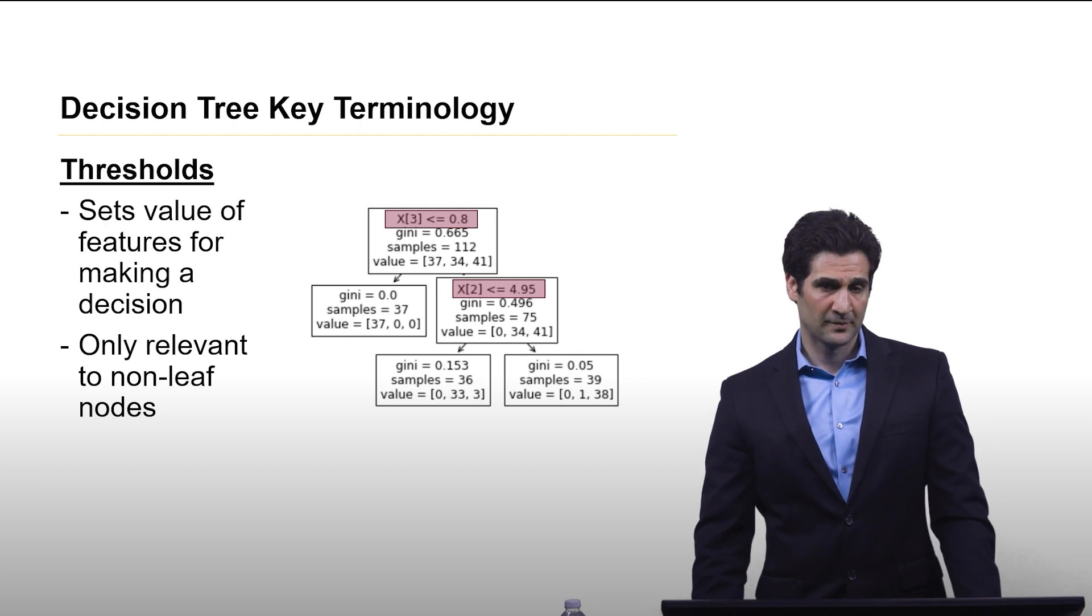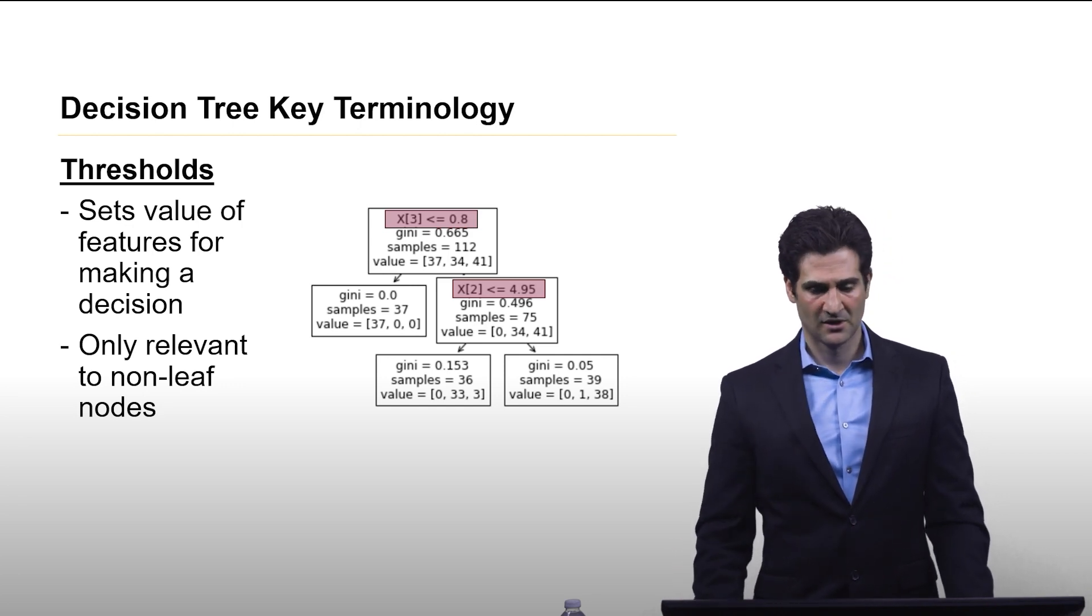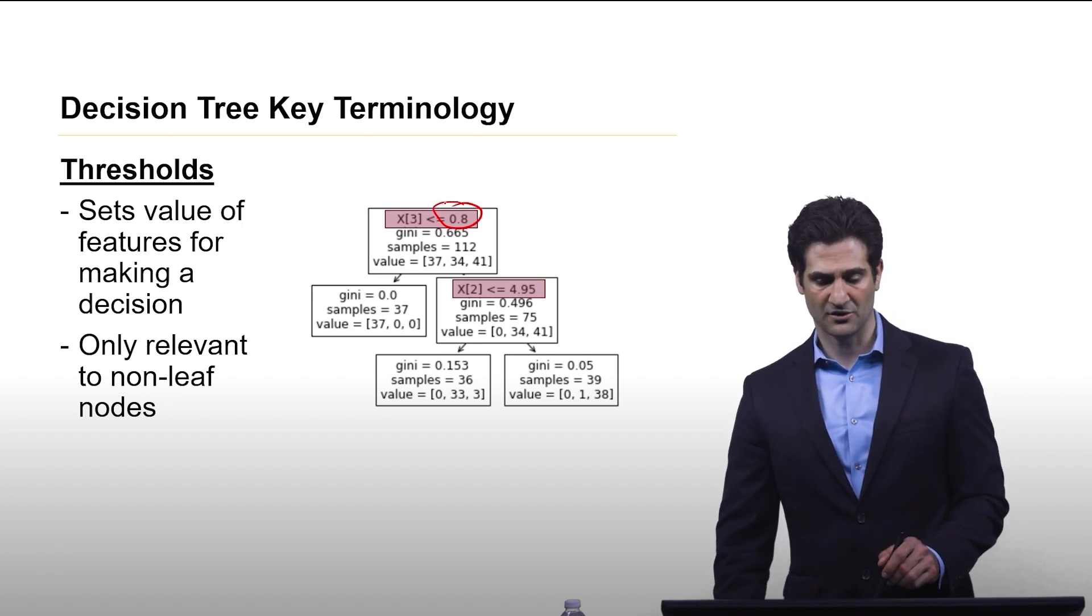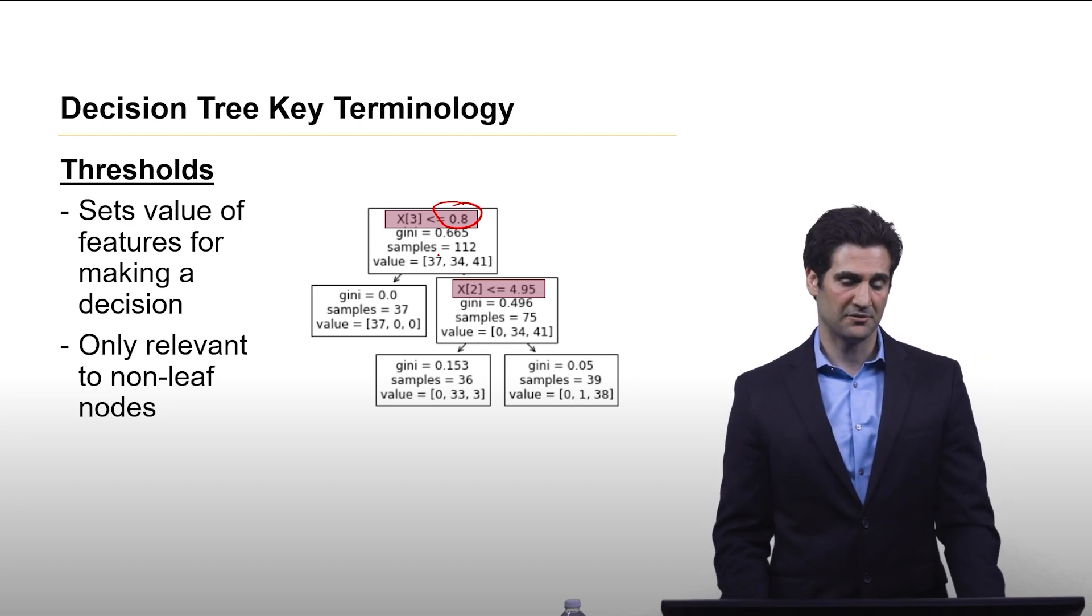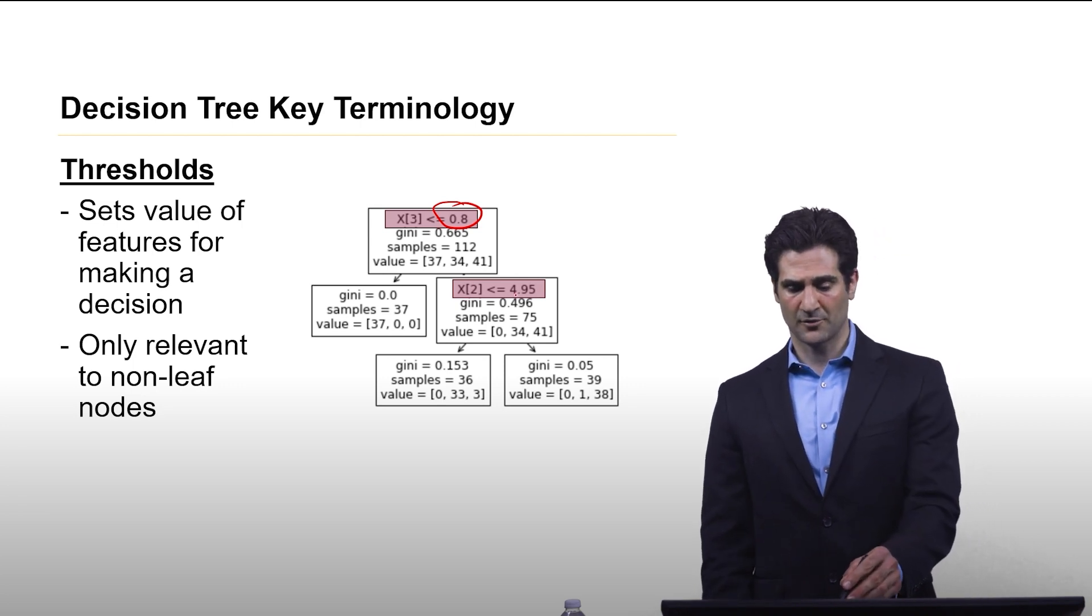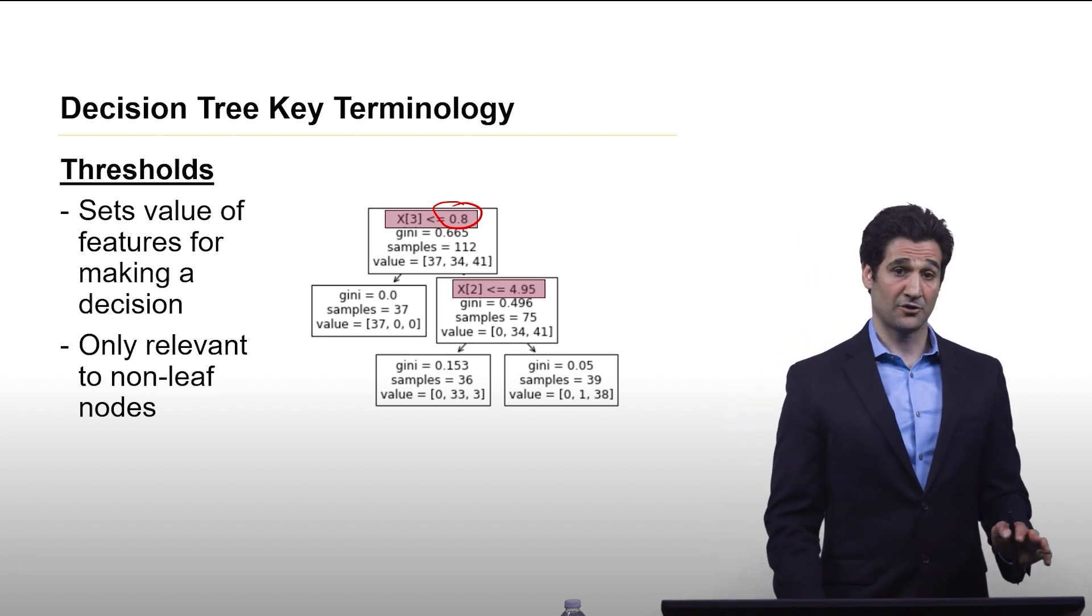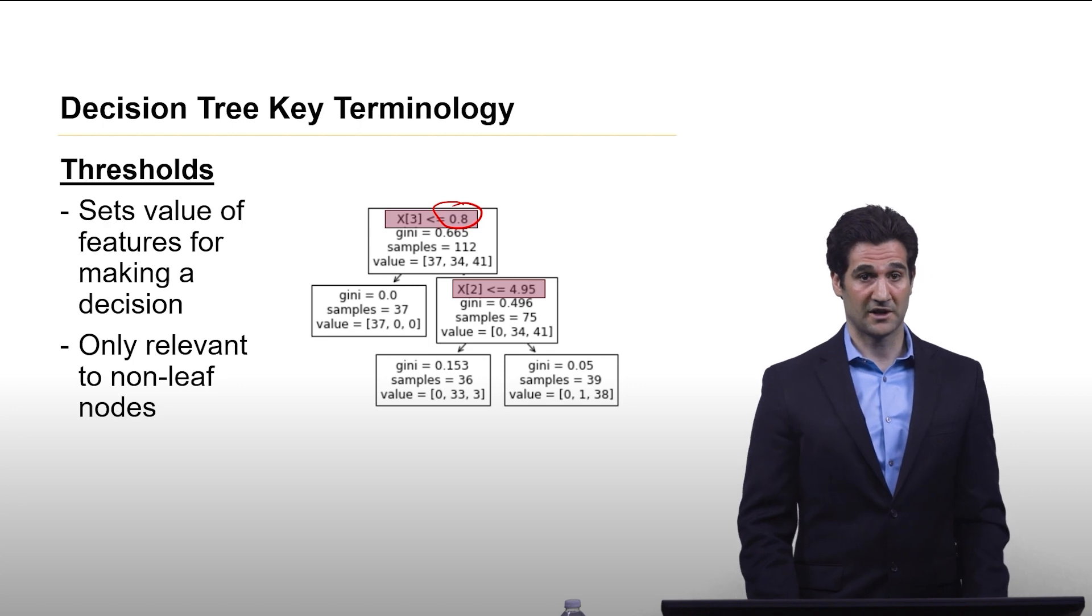The next are thresholds. So these are values assigned to a feature that cause it to make a decision. So we see that here, feature number three, if it's less than or equal to 0.8, and that's the threshold, then it's going to make a decision to go to one or the other nodes below it. Likewise, we have the same thing with feature number two being less than or equal to 4.95. These thresholds only occur in non-leaf nodes because it's where the system is making a decision.